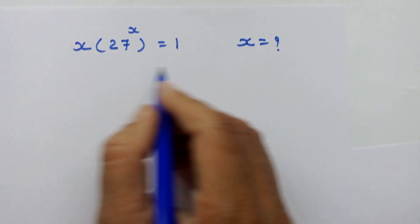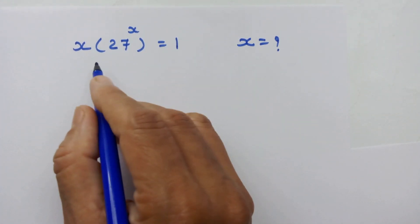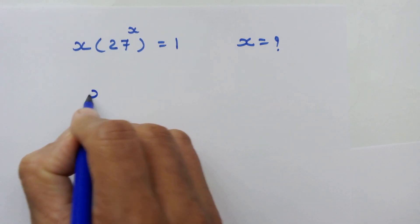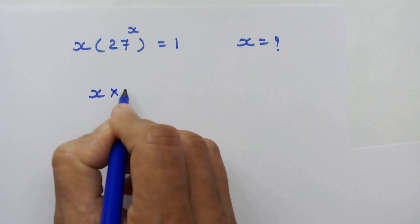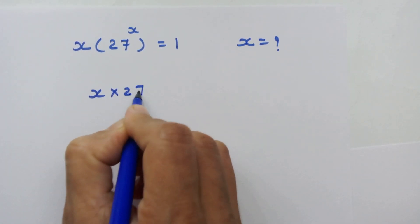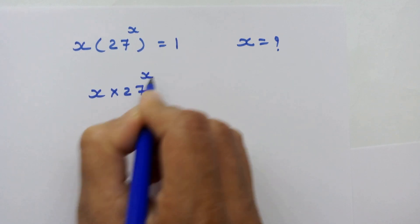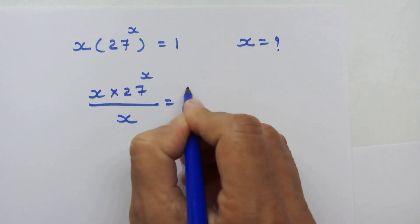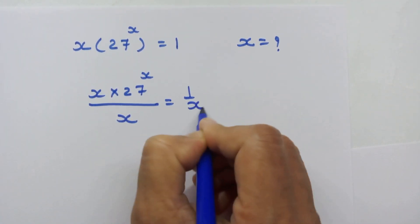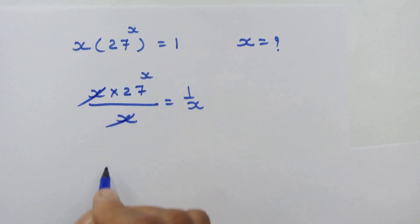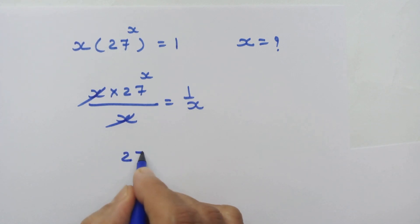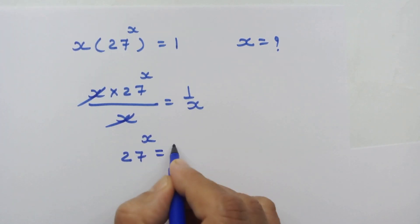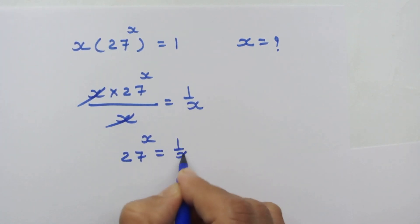What we are going to do is divide by x on both sides. So we have x into 27 raised to x upon x is equal to 1 upon x. The x's cancel, so our next step is 27 raised to x is equal to 1 upon x.